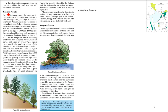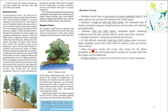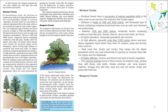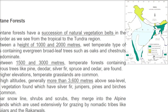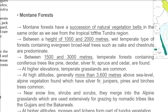Mountain forests — found in mountainous regions. These forests have a succession of natural vegetation in the same order as we see from tropical to tundra. Succession means the vegetation changes depending on the altitude as you go up.